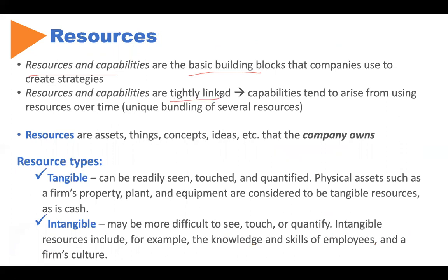Resources and capabilities tend to be tightly linked such that we get capabilities after using resources over a very long time. Resources, to be very specific, are essentially things — not always tangible because they can be intangible too — but essentially things that the company owns. Tangible resources are the ones that can be seen, touched, and quantified: buildings, equipment, property, machines.